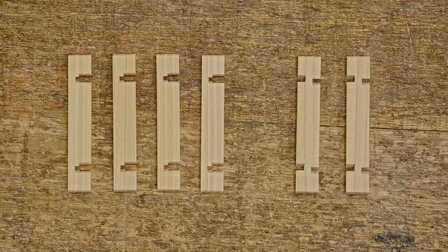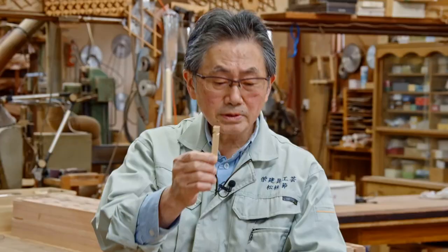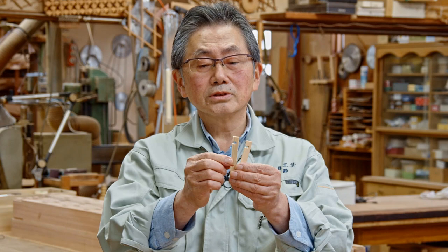There are six slightly smaller pieces. Here again, we have two pieces with grooves on both sides and four pieces with grooves in one direction only.